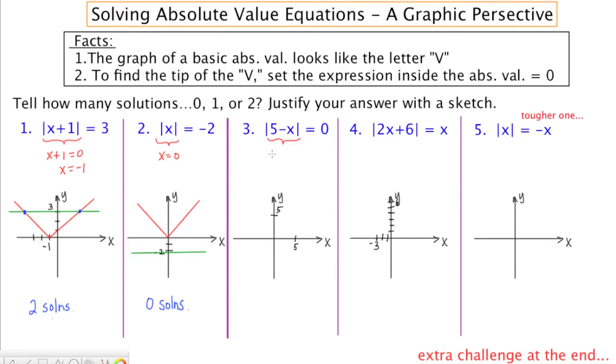The tip of that V can be found by taking 5 minus X and setting it equal to zero, getting us a result of X equals 5. So we're going to have a V whose tip is at 5.